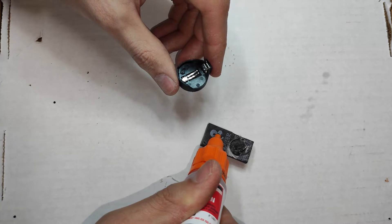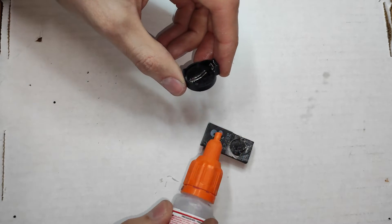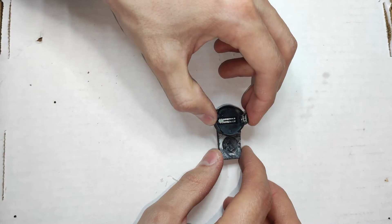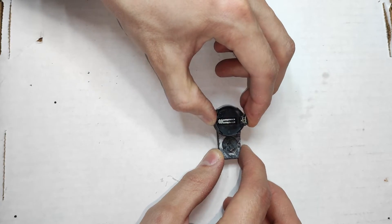I took a CR2032 holder from an old motherboard and I will use a drop of superglue to temporarily hold it in place. The other chemical is just an accelerator, so the superglue holds immediately.